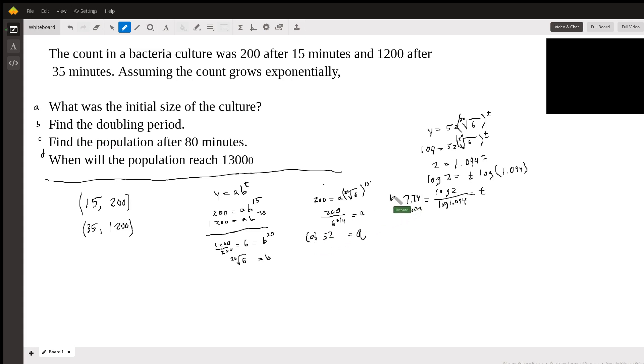the doubling time. Population after 80 minutes would just be Y equals 52 times 1.094 raised to the 80 power.